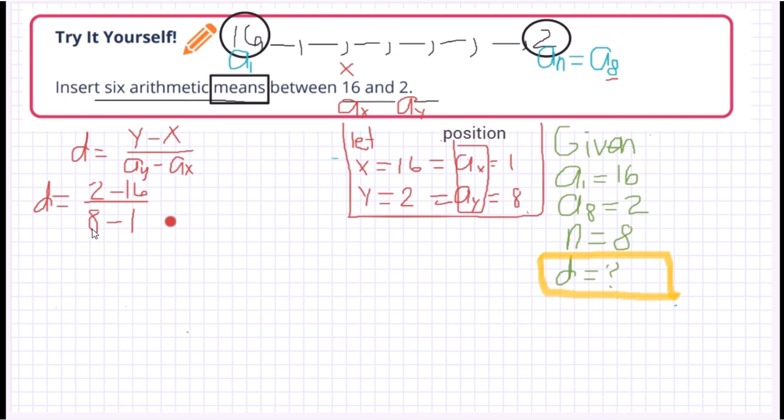Again nauna pa rin yung last and then minus the first. So that would be equal to, that's 2 minus 16 is negative 14. And then 8 minus 1 is equal to 7. So therefore we could have now our common difference. Because negative 14 divided by 7 is negative 2. So that would be our common difference.